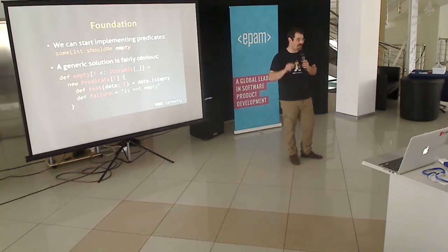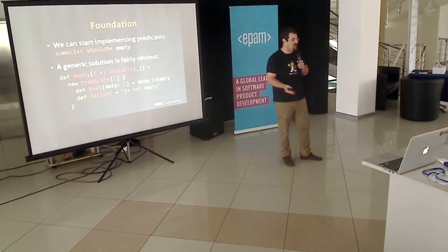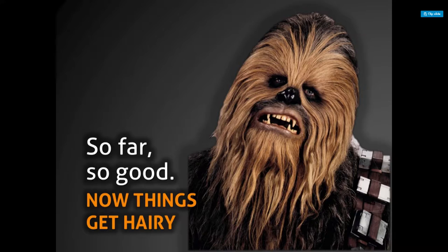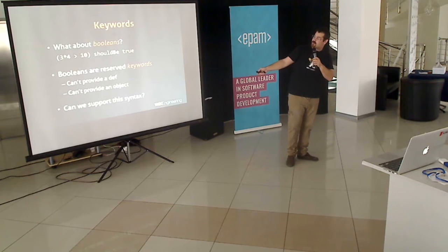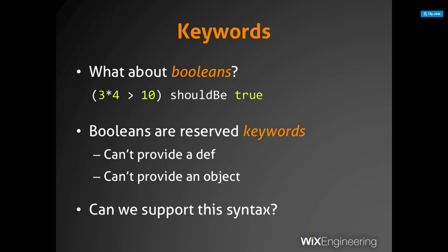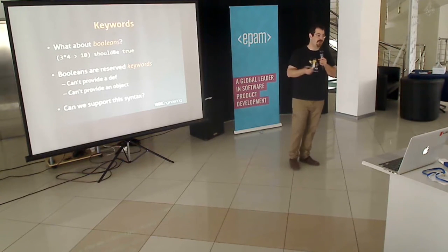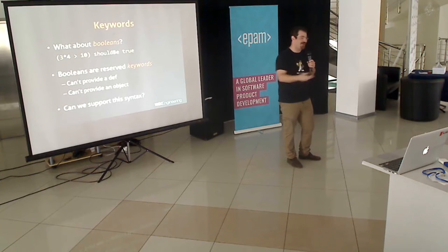Let's consider corner cases. Booleans: we want '3 times 4 is bigger than 10 should be true.' The problem is that 'true' and 'false' are reserved keywords in Scala — you cannot provide a method or object with the same name. You can wrap them in backticks, but then you'd have to use backticks whenever you use your DSL. Can we support this syntax despite the fact that these keywords are reserved? Obviously the answer is yes.